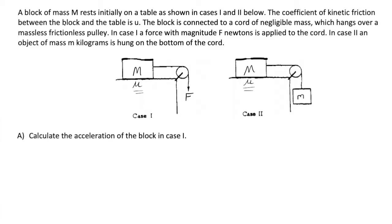The coefficient of kinetic friction between the block and the table is mu. The block is connected to a cord of negligible mass, which hangs over a massless frictionless pulley. In case 1, a force with magnitude F newtons is applied to the chord. In case 2, an object of mass lowercase m kilograms is hung on the bottom of the chord.